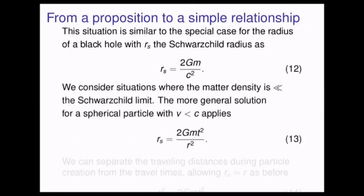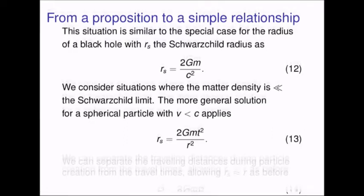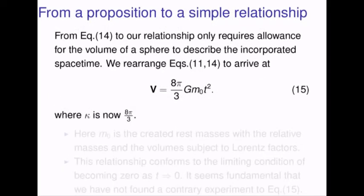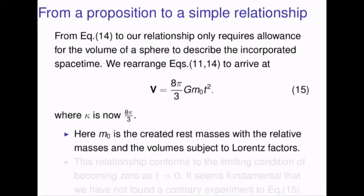This situation is similar to the special case for the radius of a black hole, R sub s, the Schwarzschild radius, as presented in equation twelve. We consider the situation where matter density is much, much less than the Schwarzschild limit. The more general solution for a spherical particle, when the velocity is less than light speed, applies here as equation thirteen. We could separate the traveling distances during particle recreation from the travel times, allowing R sub s to be equivalent to R to keep things simple and spherical, as presented in relationship fourteen. From equation fourteen to our relationship only requires allowance for the volume of a sphere to describe the incorporated spacetime. We rearrange equations eleven and fourteen to arrive at equation fifteen, where kappa is obviously now eight pi over three.